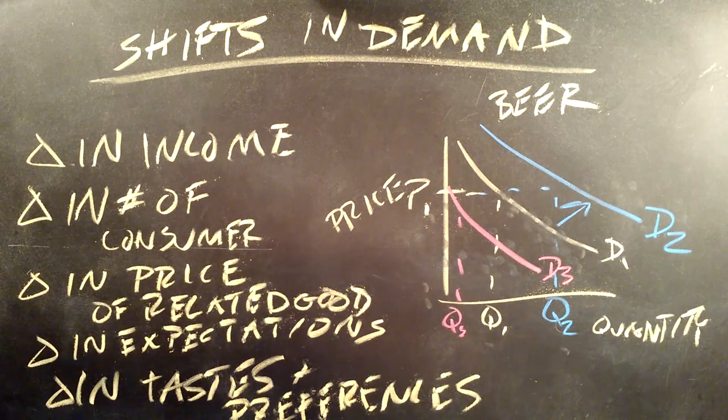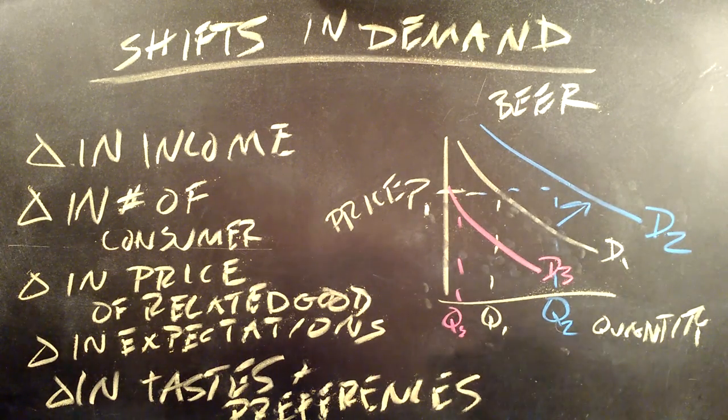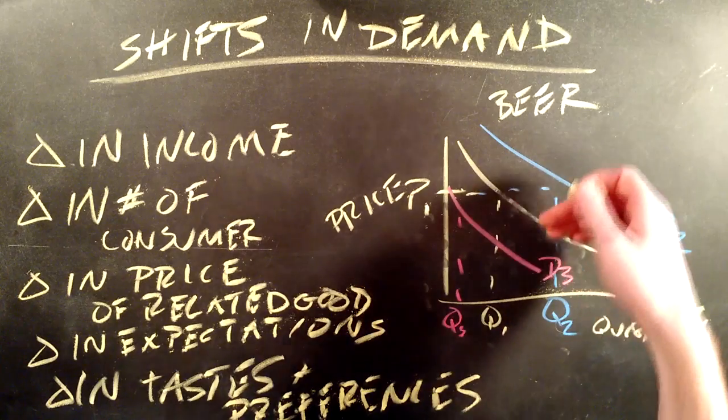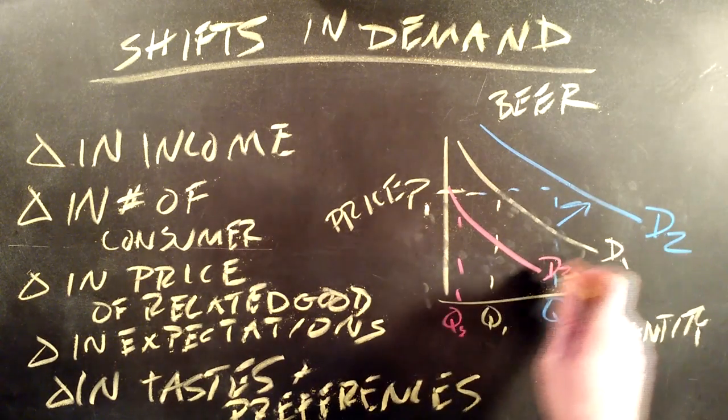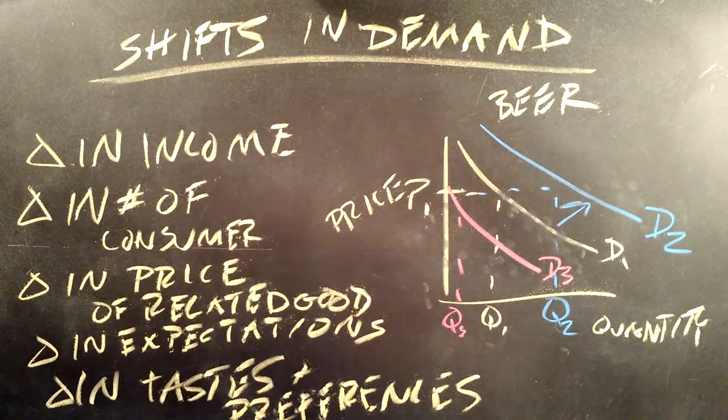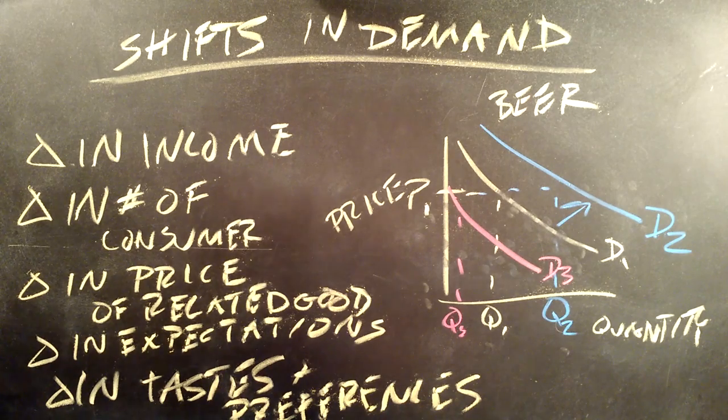Conversely, if we said beer causes cancer, and we were able to definitively show that, what we might see is a decrease in demand for beer from D1 to D3, so less people would be willing to go out and drink and purchase beer.